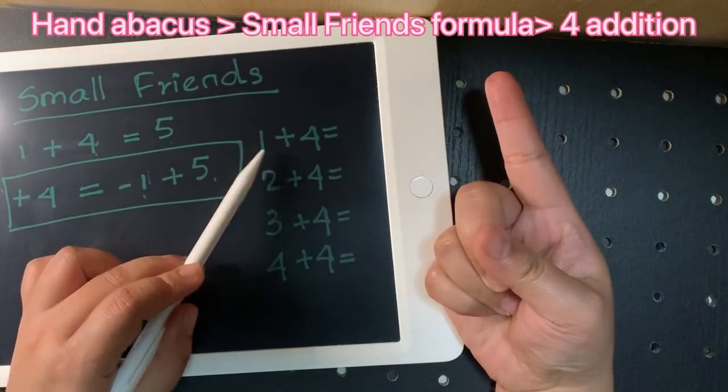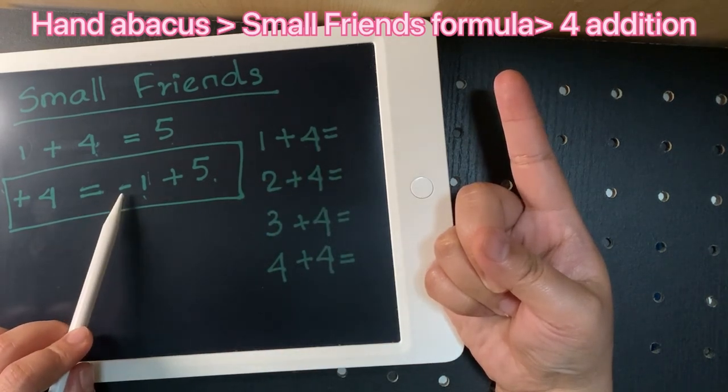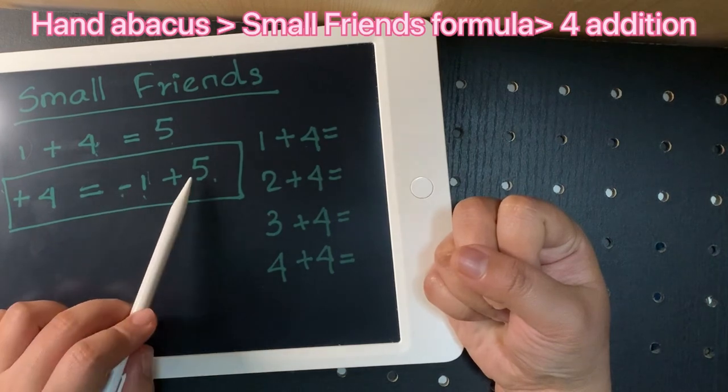When plus four, plus four, solution to minus one. Minus one: three minus one plus five equals five.